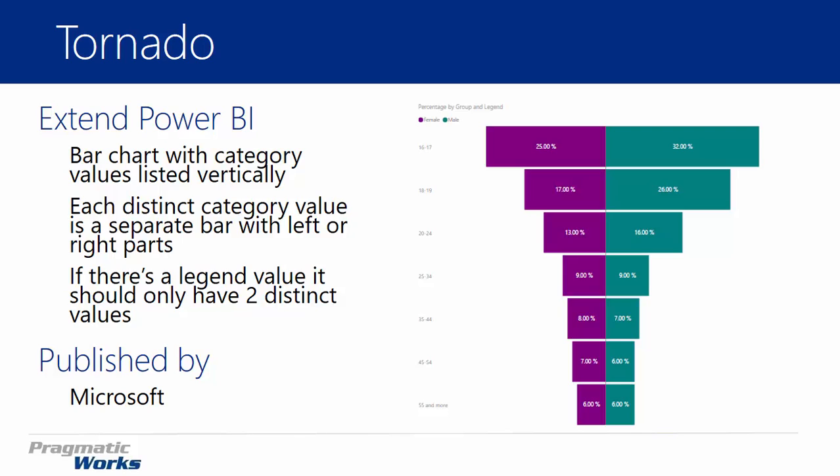You'll see the categorical values here in my example on the screenshot listed vertically, where you see all the 16 to 17 year olds, 18 to 19 year olds, 20 to 24, on that vertical list going from top to bottom. It also allows you to have each distinct category value in a separate bar — left or right parts — which is what you're seeing here. I have a left and a right part, female and males showing on the Tornado Chart.